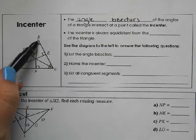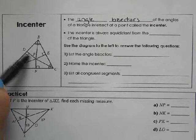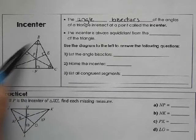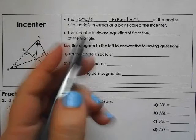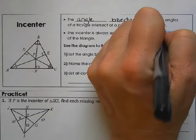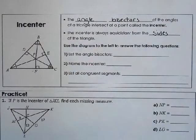Since any point on an angle bisector is equidistant from the sides of the angle, the incenter is always equidistant from the sides of the triangle.